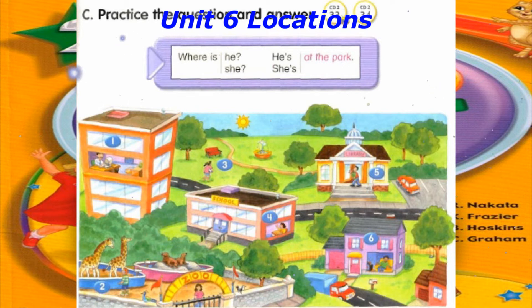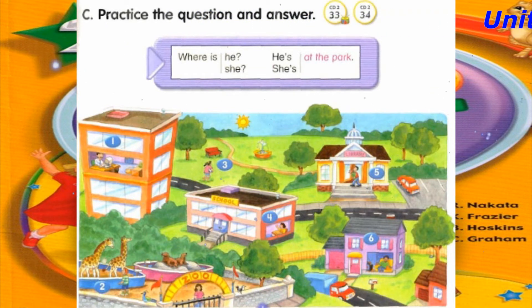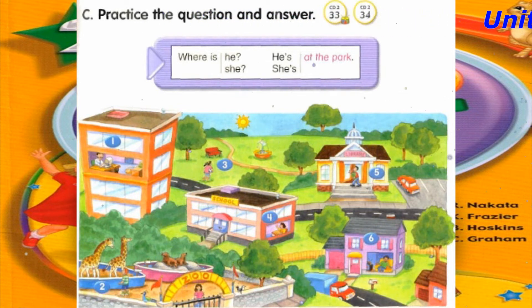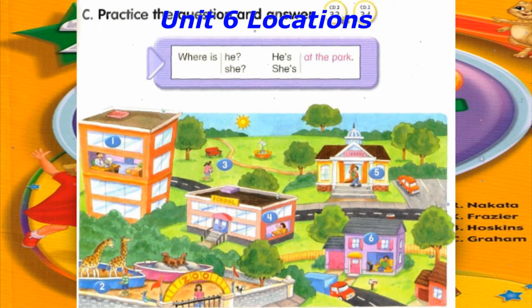Number 2: Where is he? He's at the zoo. Number 3: Where is she? She's at the park. Number 4: Where is she? She's at school.